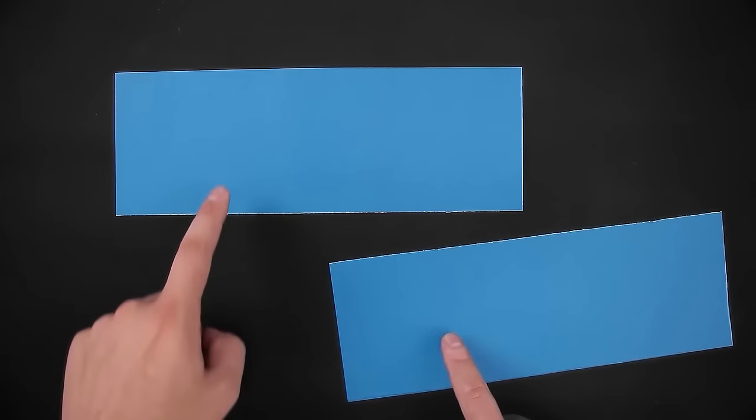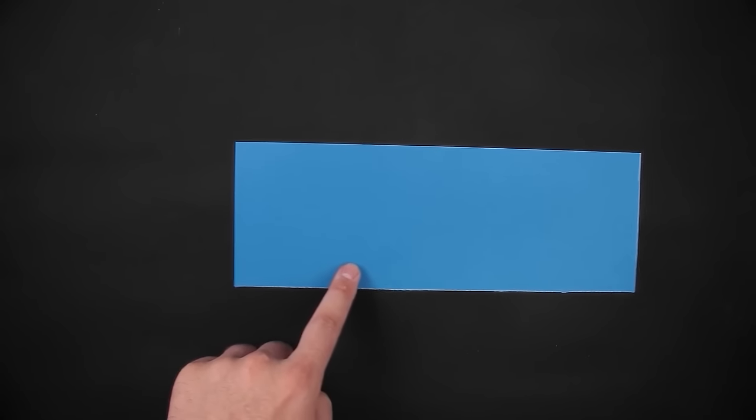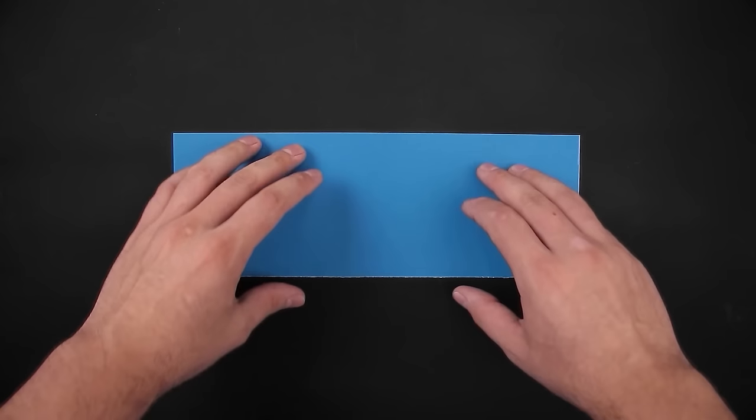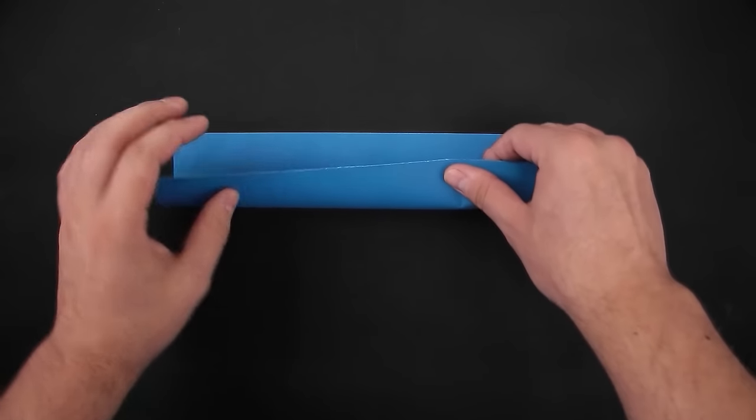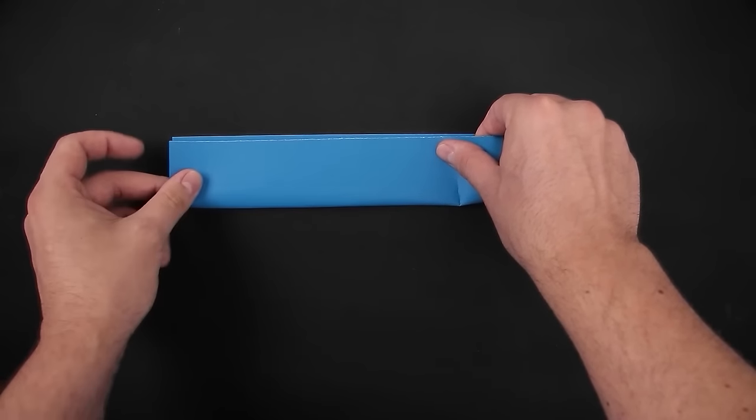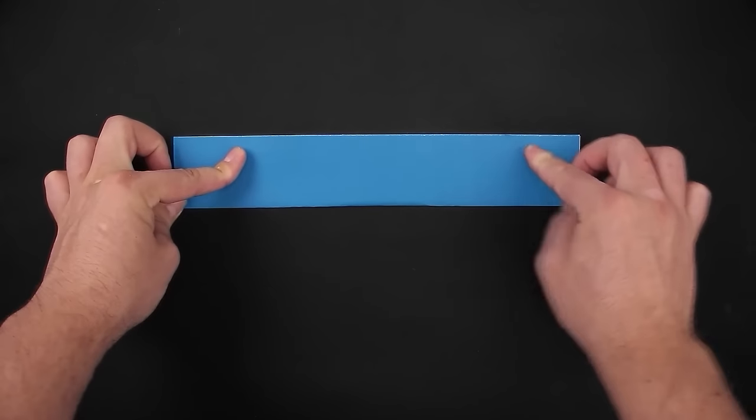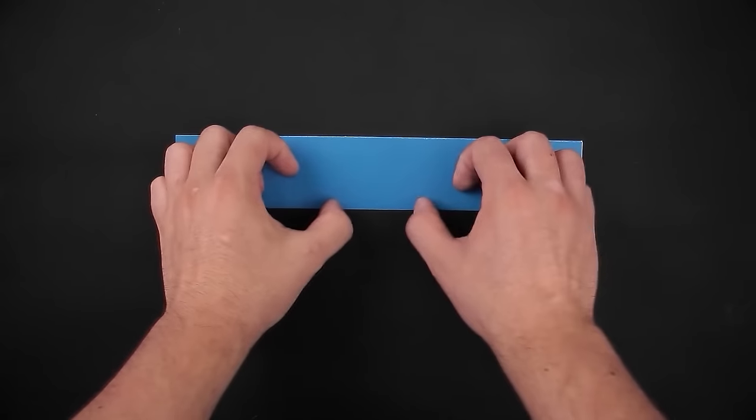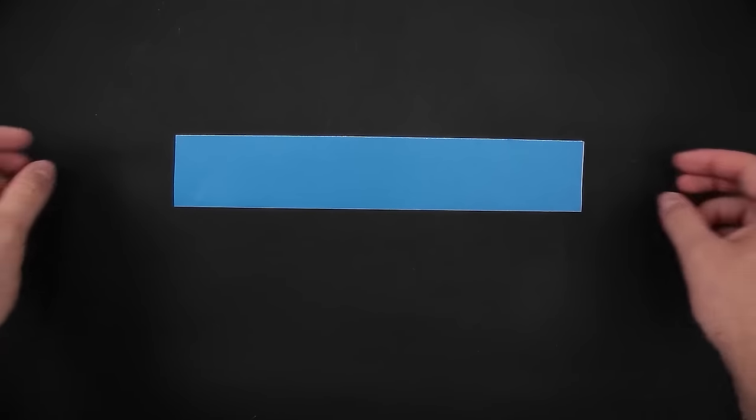And now we can just cut or tear the paper like I'm going to do now. We separate one of the halves for now, and just like we did before, let's start by folding it in half.